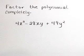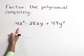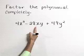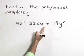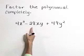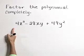Factor the polynomial completely: 4x squared minus 28xy plus 49y squared. Notice first that there's not a greatest common factor to pull out in the front.